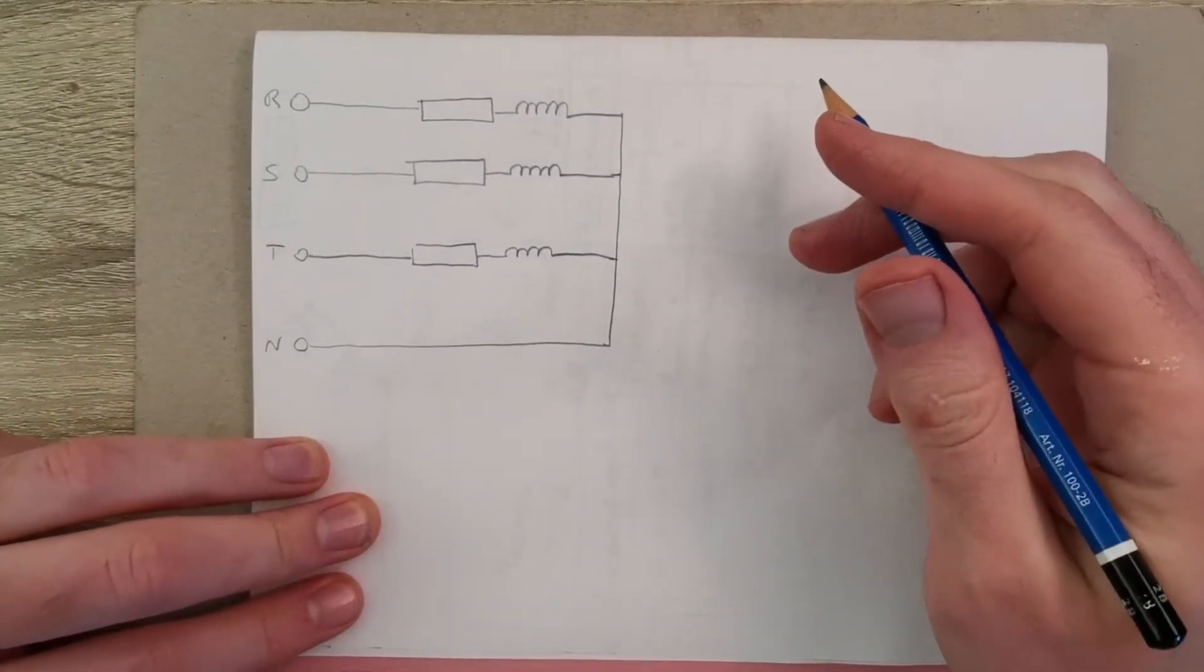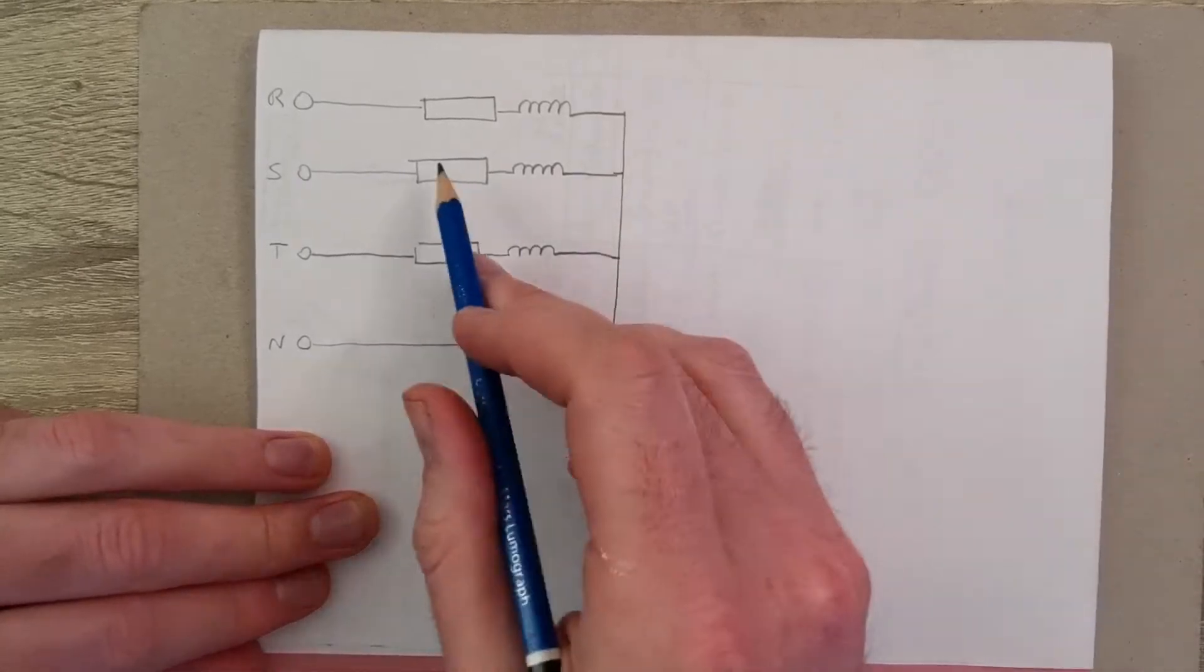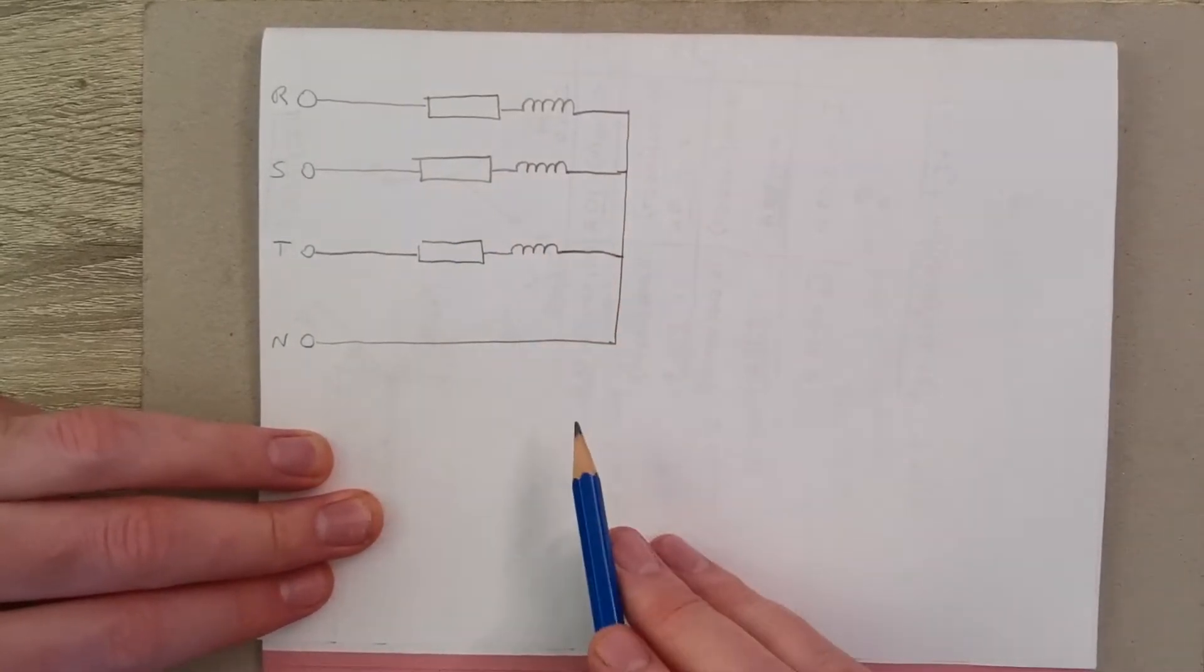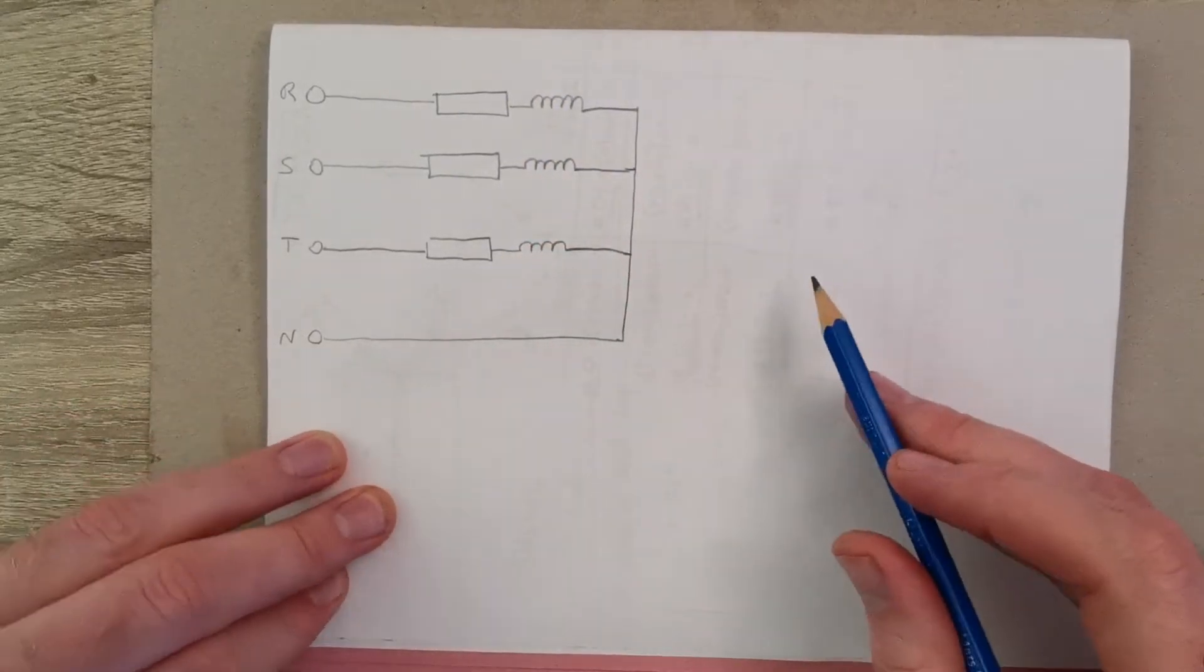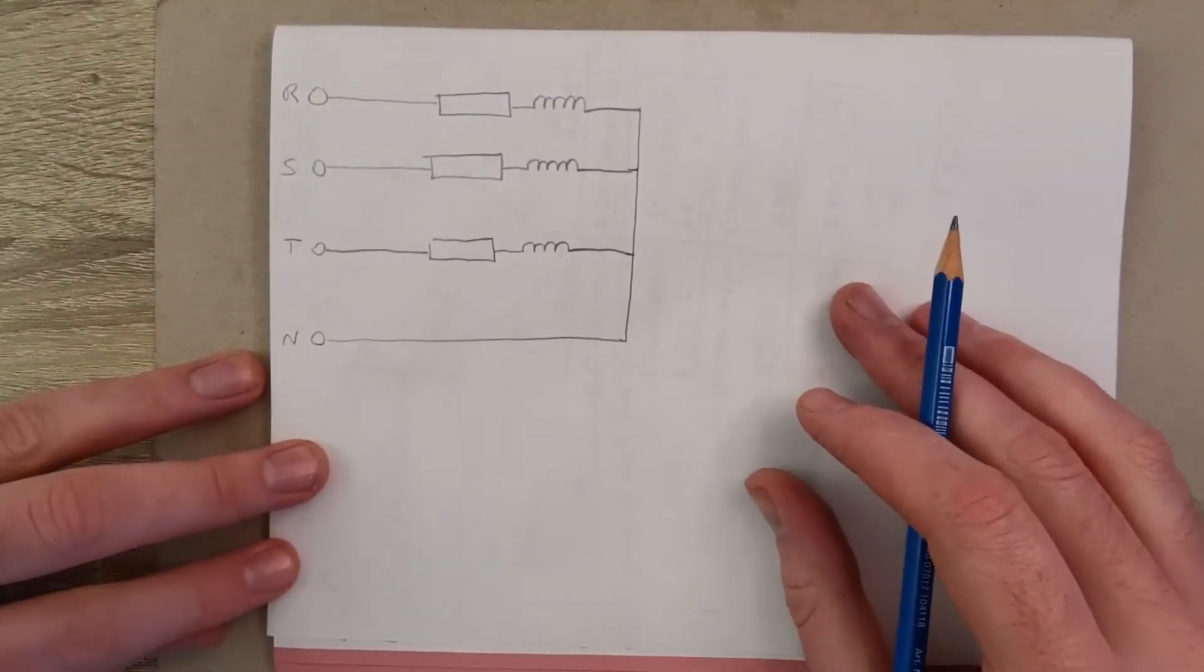So in this question you've been asked to calculate the total real power in a three phase unbalanced load. I've just done a quick sketch of the circuit given in the question here and we'll fill in the information from the question now.